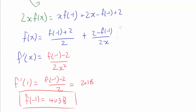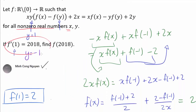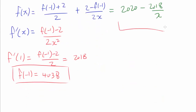With f(−1) = 4038, we plug in: f(x) = (4038 + 2)/2 + (2 − 4038)/(2x) = 2020 + (−4036)/(2x) = 2020 − 2018/x. We have shown that if a function f satisfying the identity and the constraint f'(1) = 2018 exists, it must be f(x) = 2020 − 2018/x.